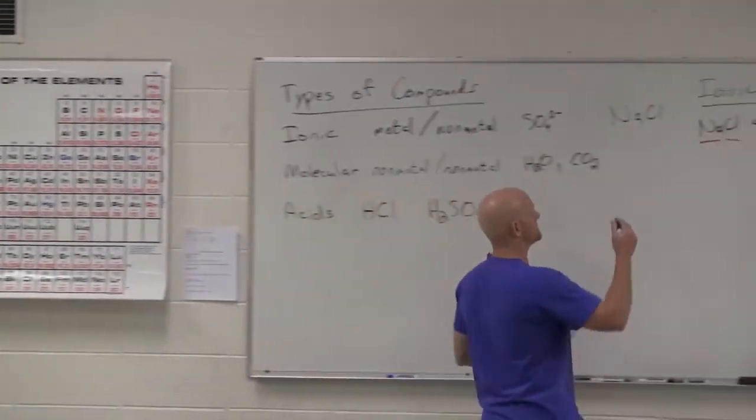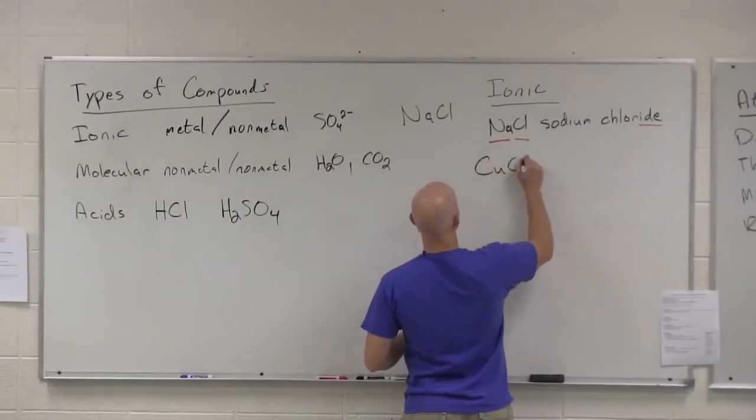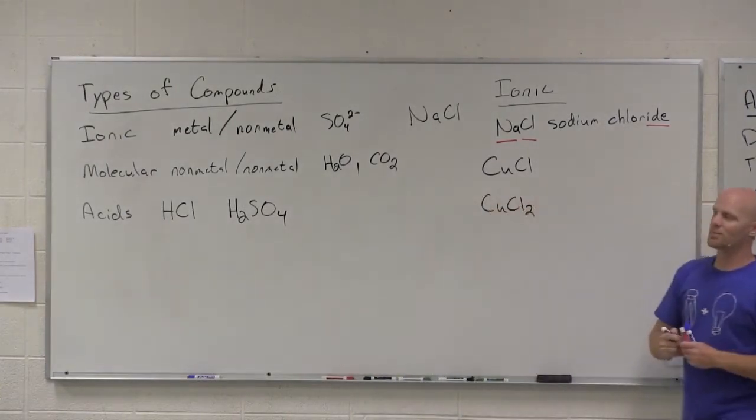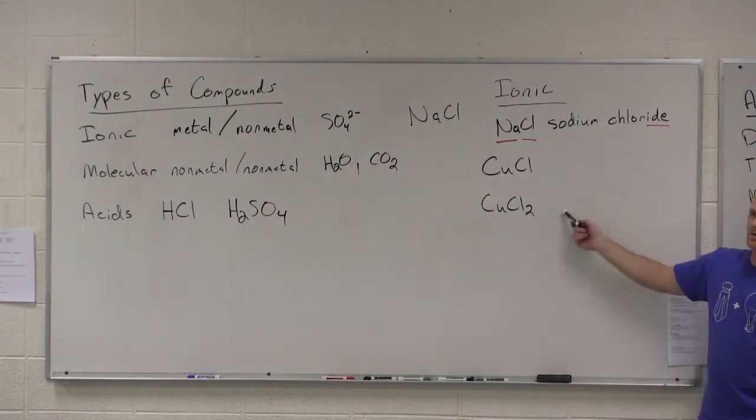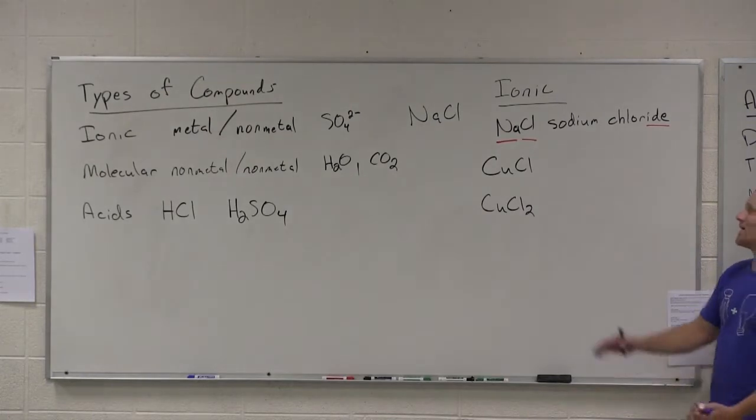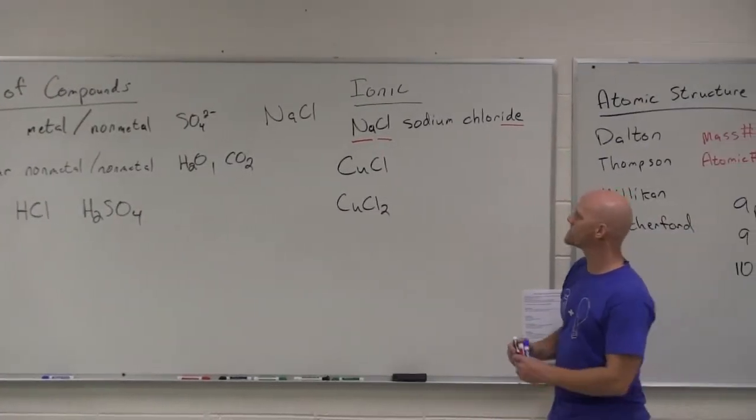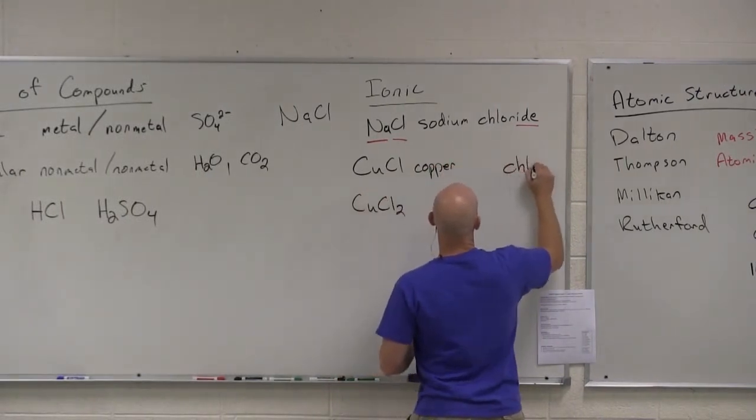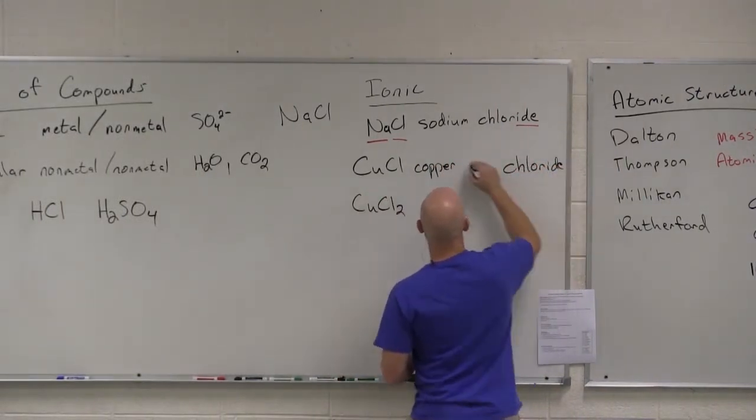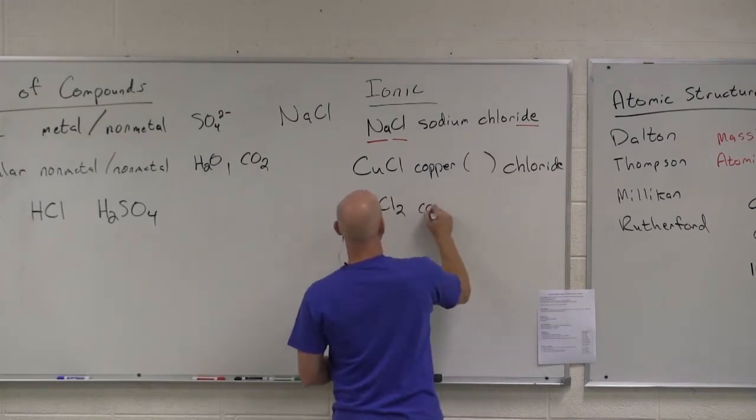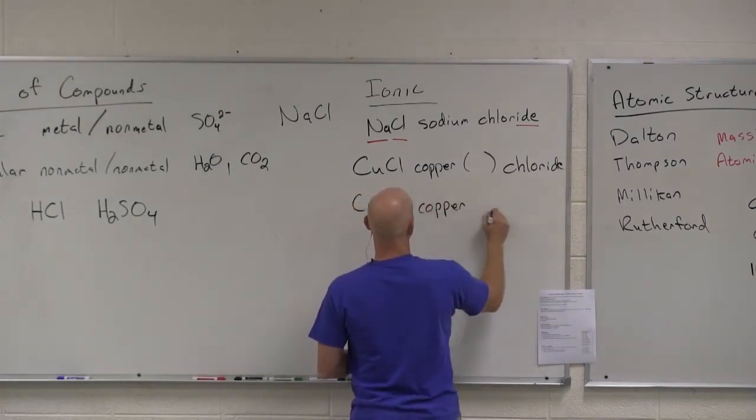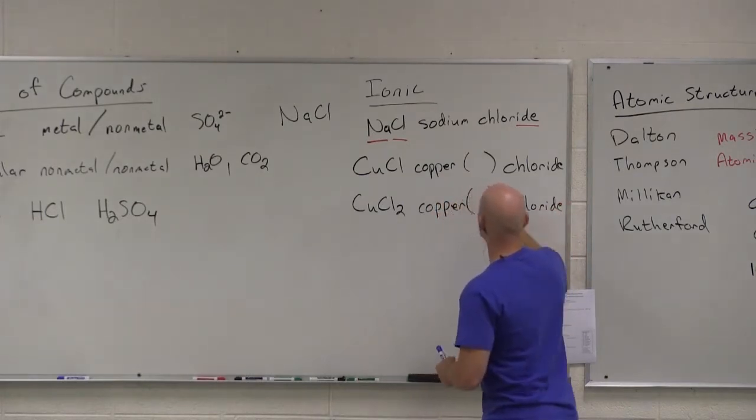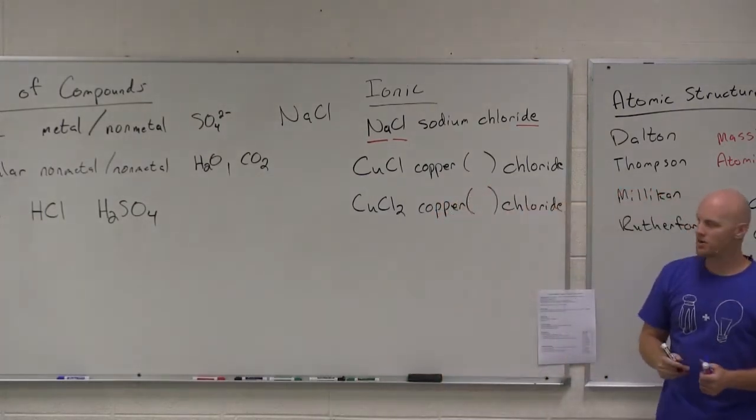So because if we have CuCl and CuCl2, if we skip rule number two, we would say copper chloride for both of these. And they are two different compounds, so we've got to get more specific. So we're still going to say copper chloride. We're just going to save some room for a Roman numeral here.